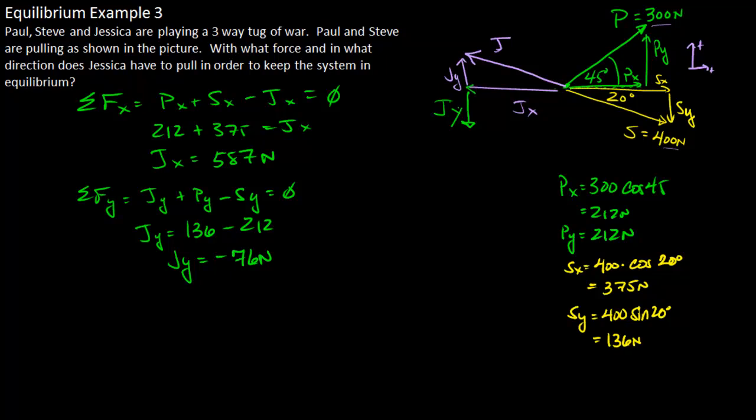Now we want to find Jessica's total force in the direction of her total force. So we can make a final triangle out of Jessica's forces. We know our guess here was incorrect that Jessica's force is actually acting at this downward angle. So there's Jessica's force at some angle theta.